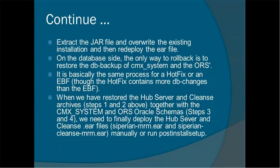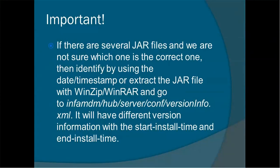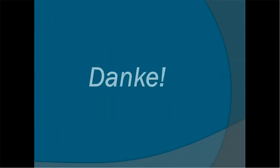Important things to remember: if there are several JAR files and you are not sure which one is correct, identify the right one by date and timestamp. Or extract the JAR file using WinZip or WinRAR and go to the file info/MDM hub server/conf/version_info.xml — it will have version information with start install time and end install time. Make sure you are using the correct version of the JAR file; otherwise, even after reverting, your application may throw errors if the wrong JAR files are present.